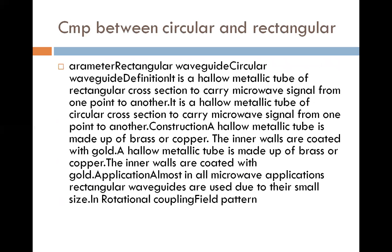Now we see the comparison between rectangular and circular waveguide. Rectangular waveguide: hollow metallic tube of rectangular cross section to carry microwave signal from one point to another point. Circular: hollow metallic tube of circular cross section to carry the microwave signal from one point to another point.